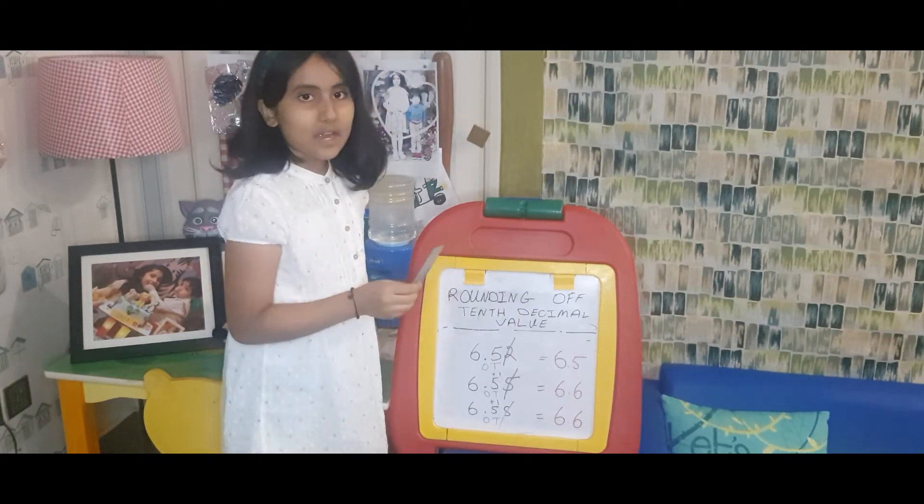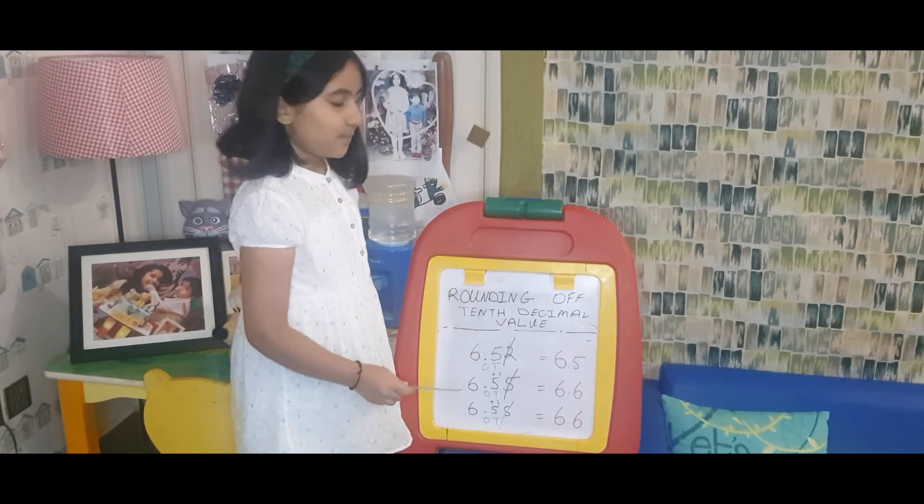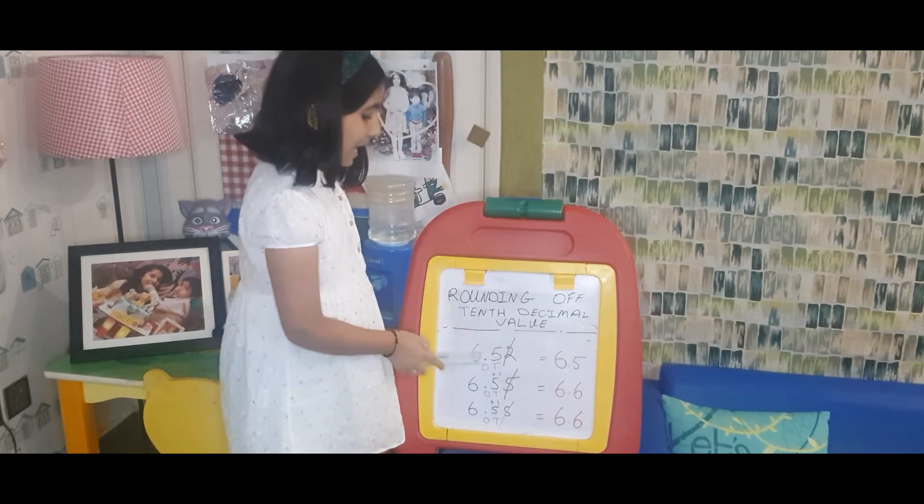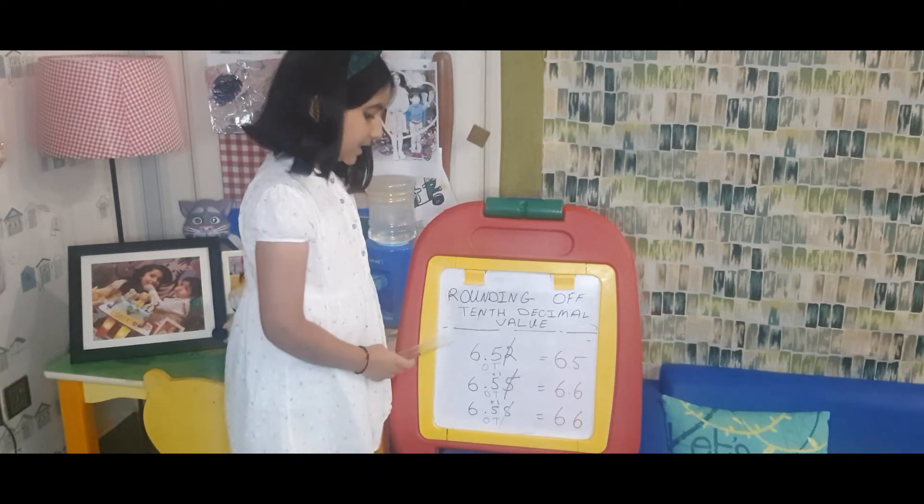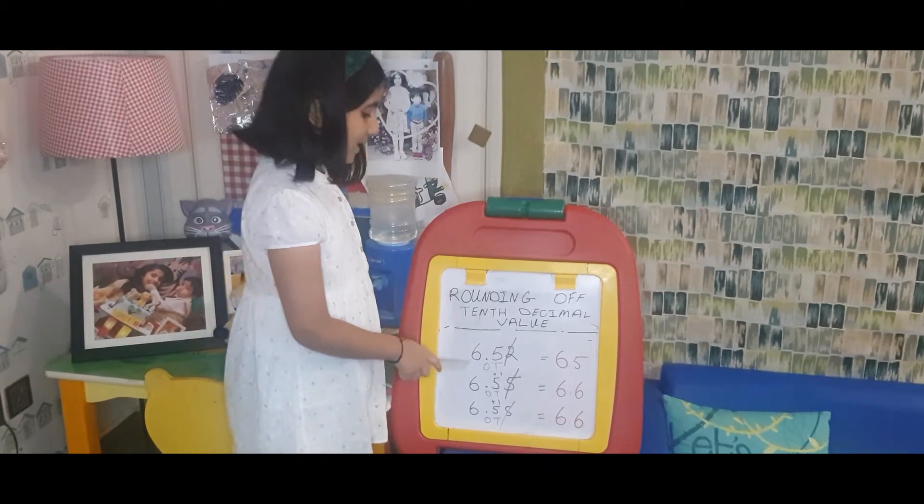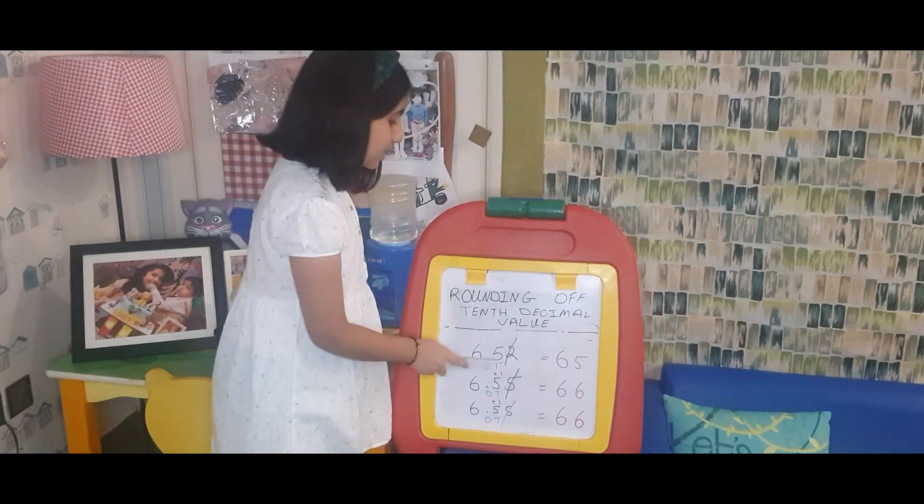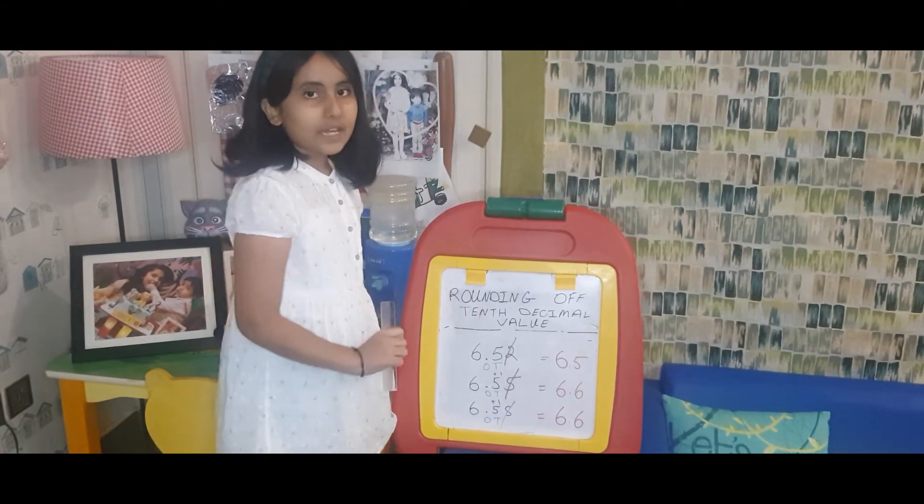I will consider this decimal as one, so I'll write 'O' down here for one. Then the digit on the right side of one is ten, so I'll write 'T' down here under the 5. Now I have found that the tenth decimal value of this number is 5.